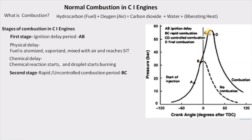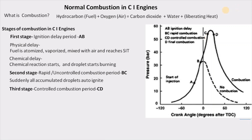From point B to the peak pressure point C is the uncontrolled combustion stage. Whatever fuel molecules were accumulated and prepared for burning in the first stage will suddenly auto-ignite, and an explosion happens inside the combustion chamber. This is called the uncontrolled combustion stage because we don't have control over the auto-ignition happening inside the combustion chamber.